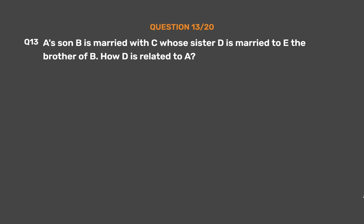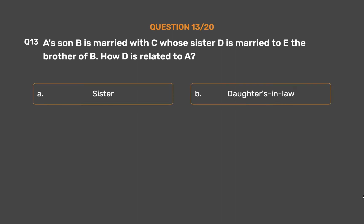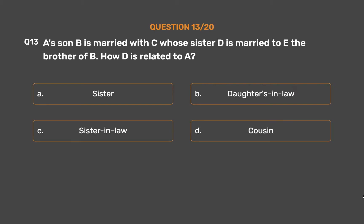Question number 13. A's son B is married with C, whose sister D is married to E, the brother of B. How is D related to A? Option A: Sister. Option B: Daughter-in-law. Option C: Sister-in-law. Option D: Cousin.